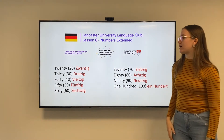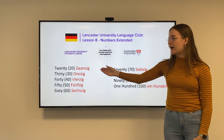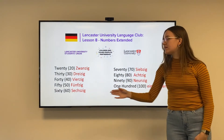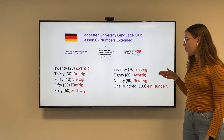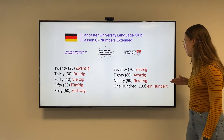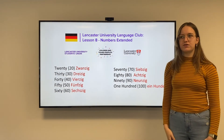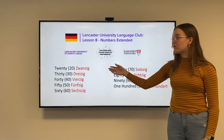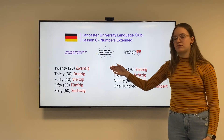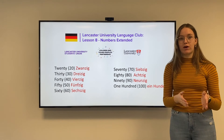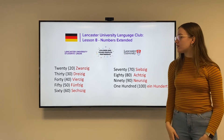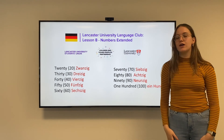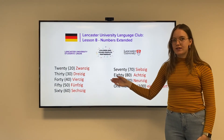So that is 20, 30, 40, 50, 60, 70, 80, 90, 100. So if you wanted to say 21 for example, you'd say 'ein und zwanzig', which in English translates to 'one and twenty'. That applies to all the numbers, so for 33 you'd say 'drei und dreißig'.